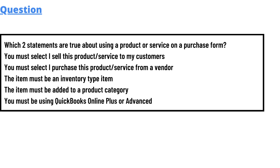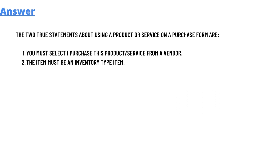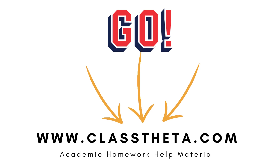The answer is: the two true statements about using a product or service on a purchase form are — you must select to purchase this product or service from a vendor, and the item must be an inventory type item.